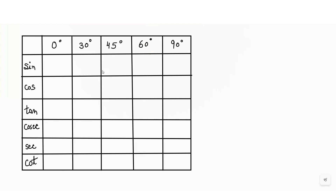What we need to do first: we will write here 0, 30, 45, 60, and 90. And first we will calculate the values for sine. So I'll write here 0, 1, 2, 3, 4. This is our step 1.